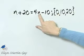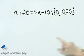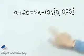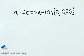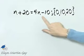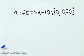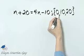So how do we do that? Well, we'll replace n by zero, see if a true statement occurs. Then we'll replace n with 10, see if a true statement occurs. Then we'll replace n with 20 and see if a true statement occurs. So let's start with zero.